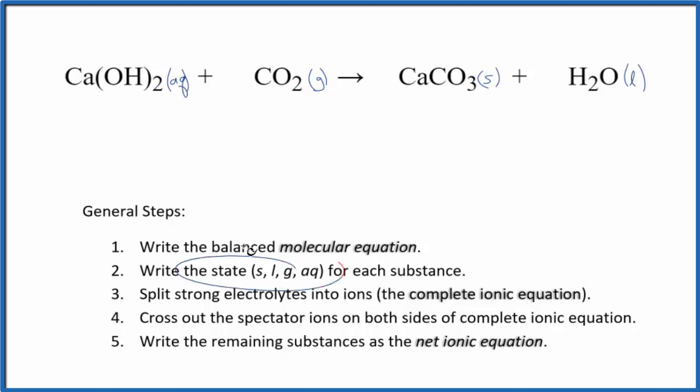Now we have the states for our net ionic equation. We can split the strong electrolytes into ions, giving us the complete ionic equation, sometimes called the total ionic equation. On the periodic table, calcium is in group 2 with a 2+ ionic charge. The hydroxide ion has a 1- charge.